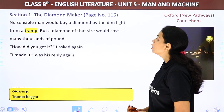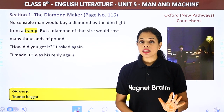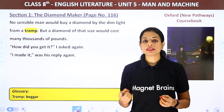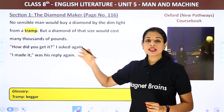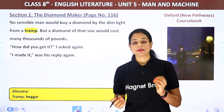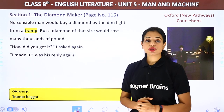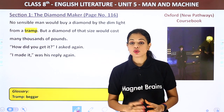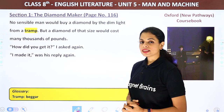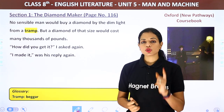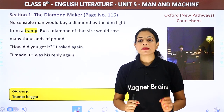'No sensible man would buy a diamond by the dim light from a tramp.' But a diamond of that size would cost many thousands of pounds. 'How did you get it?' the narrator asked again. 'I made it,' was his reply again. The narrator had heard of Moisan, but knew his artificial diamonds were very small. He shook his head.